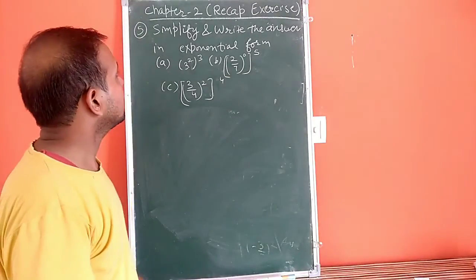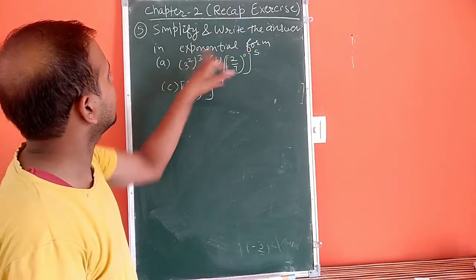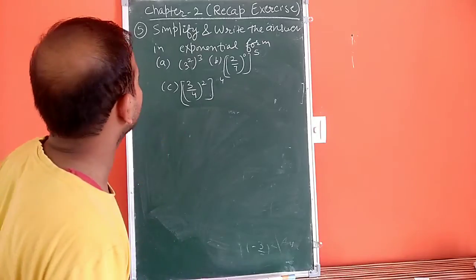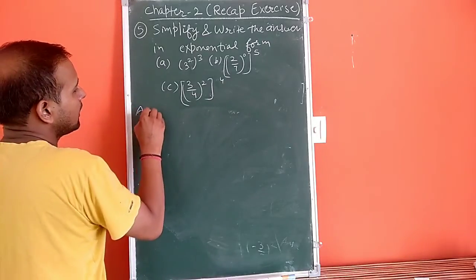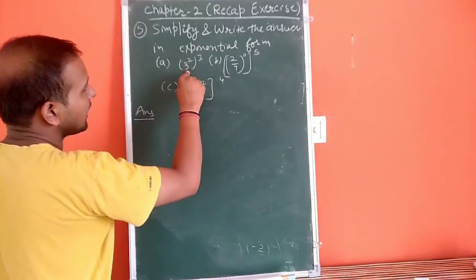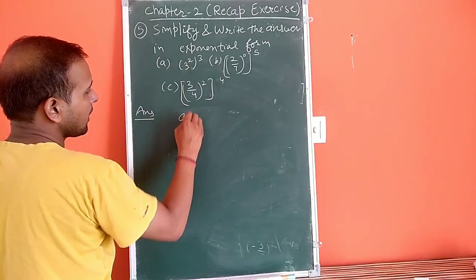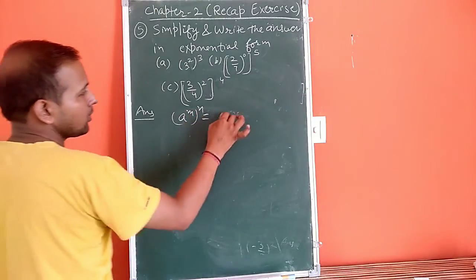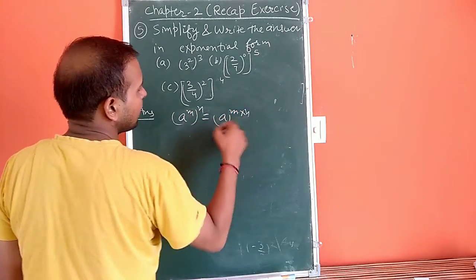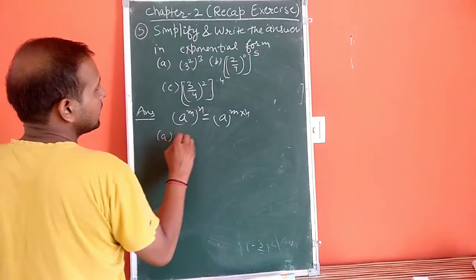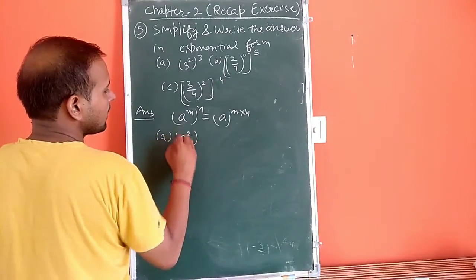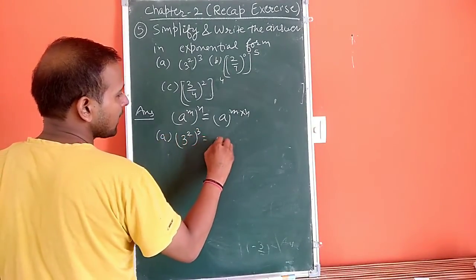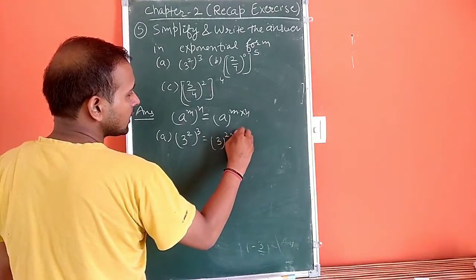Now question 5 is to simplify and write the answer in exponential form. We have a^m to the power m. So we have a to the power m times m. Using this formula, we have part (a): (3/2)^2 and its power is 3. So power multiplies: 2 into 3 equals (3/2)^6.